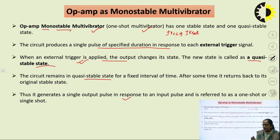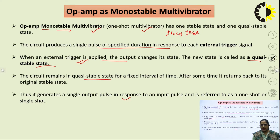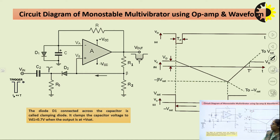So the monostable multivibrator will be in its stable state, and when we apply external triggering, it will change its state from stable to quasi-stable. If we want to realize applications where the circuit should be in a stable state and operate for a certain time corresponding to some external signal, we can use this circuitry. Let us now look at the circuit diagram and waveforms.